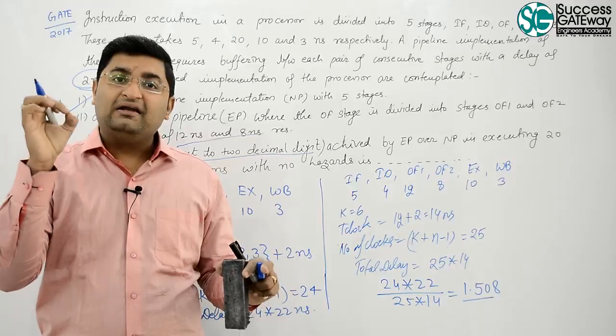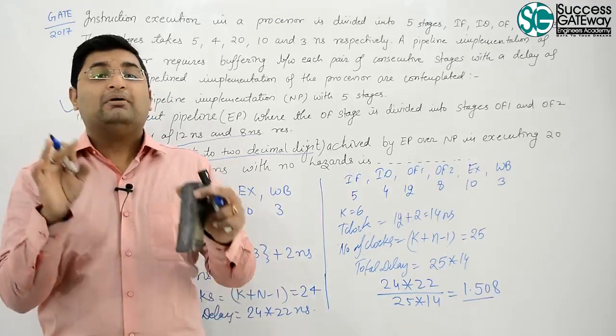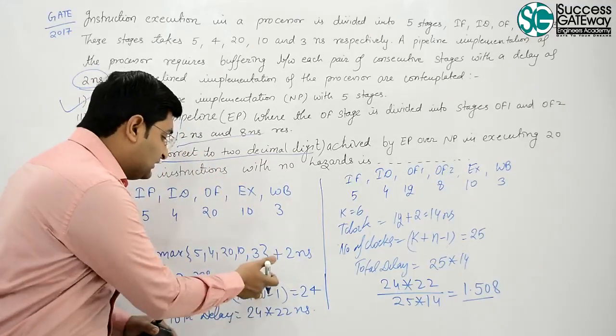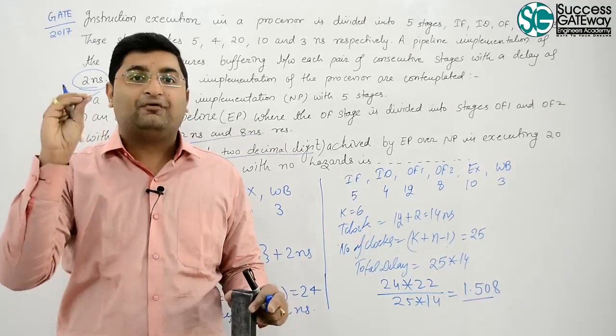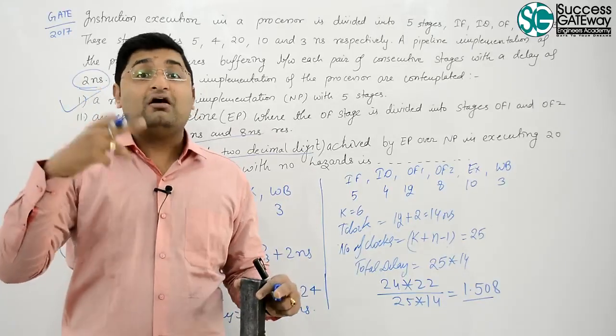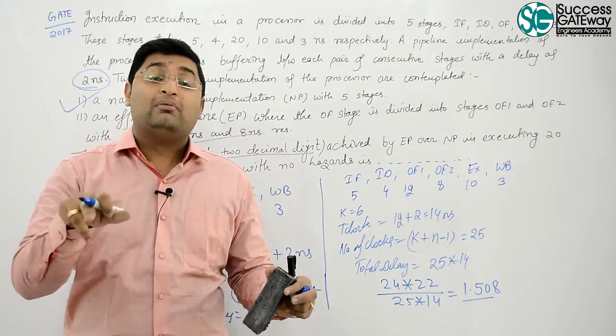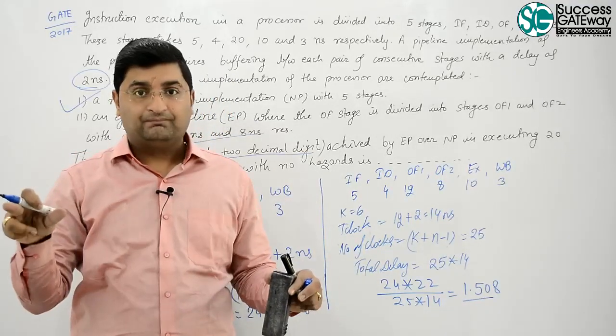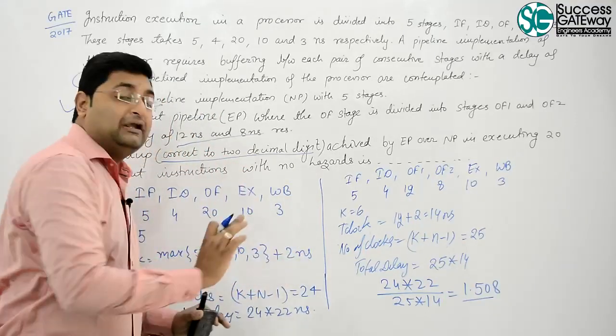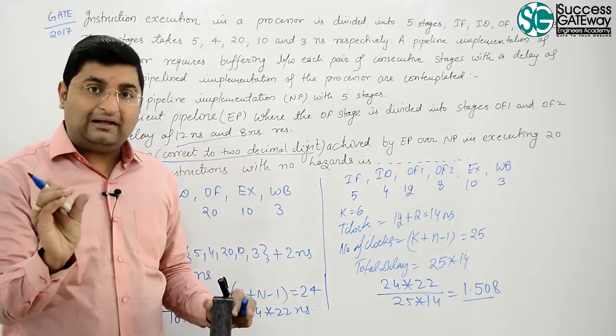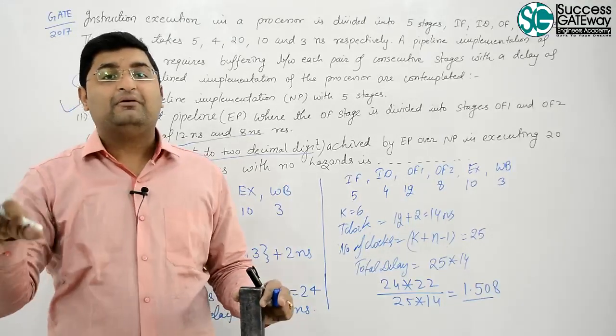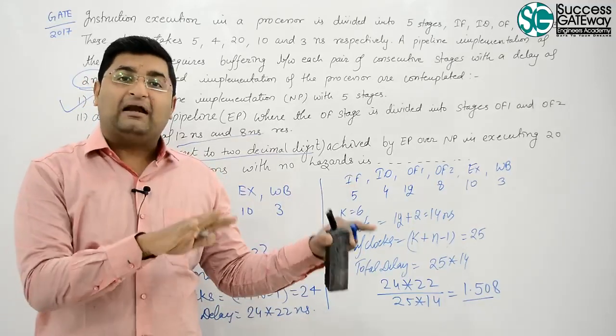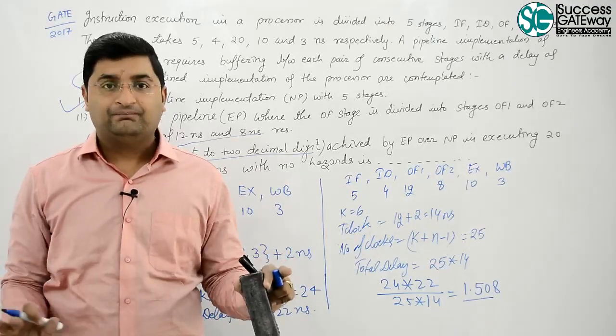Just follow the instructions. In instruction pipelining, to calculate number of clocks you will use K plus N minus 1. That will give you number of clocks needed. Clock delay will be maximum of stage delay plus overhead if any. Clock delay multiplied by number of clocks will give you total time to execute that instruction in pipeline.